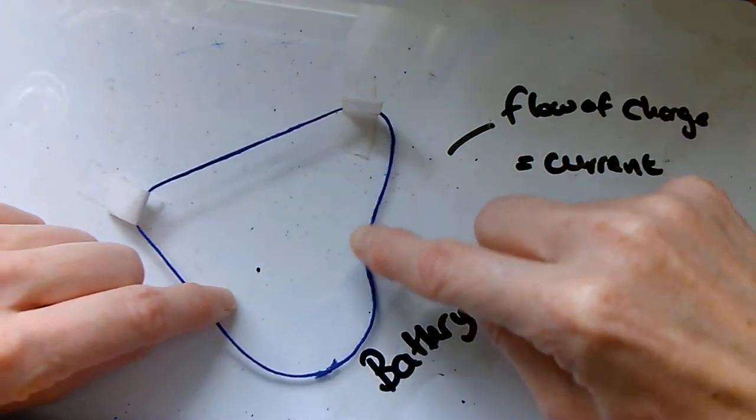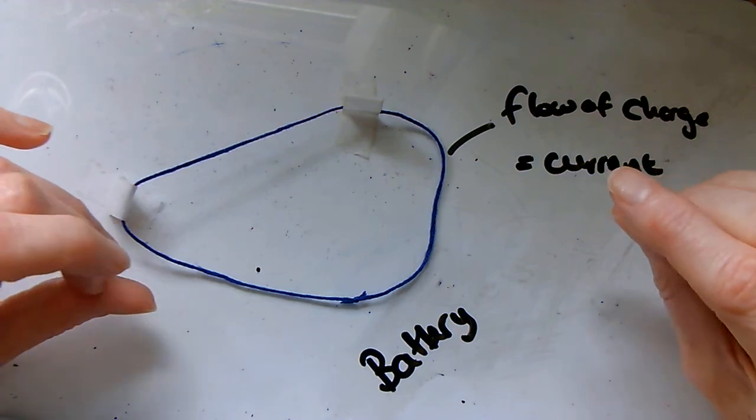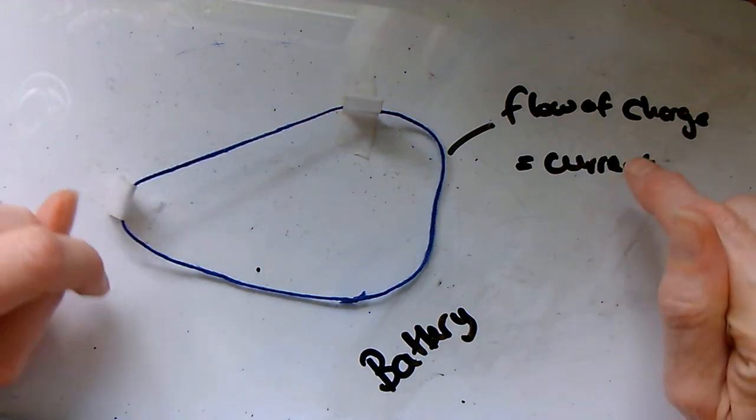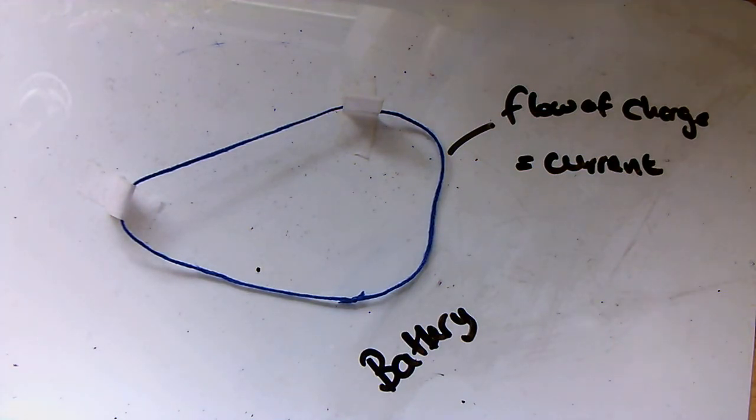What we have here is the battery, shown by me. The battery sets the particles in motion, and then we have the rope, which is showing the flow of charge, or the current around the circuit.